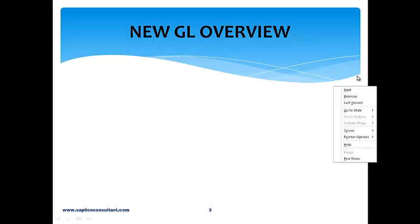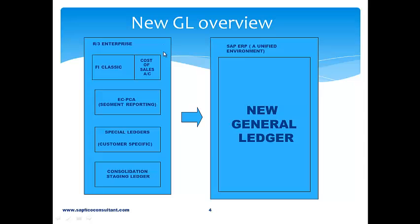On the left-hand side we find R3 Enterprise, the old version 4.7, which had FI classic, cost of sales accounting, EC-PCA traditionally known as profit center accounting used for segment reporting, then special ledgers, and consolidation staging ledger. With the advent of ECC 6 New General Ledger, all of these modules which needed to be activated are no longer required and everything is merged into a single New GL. That is the beauty of New GL.